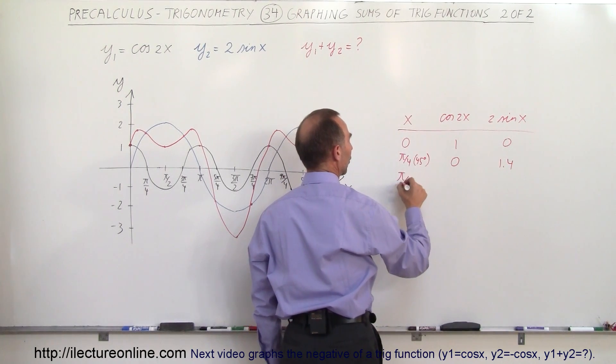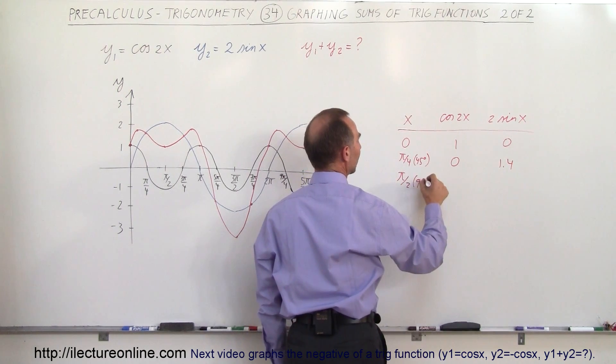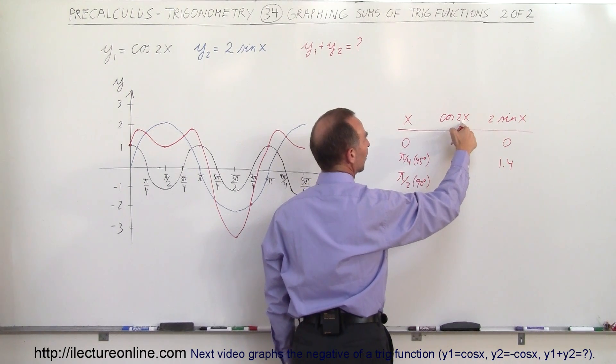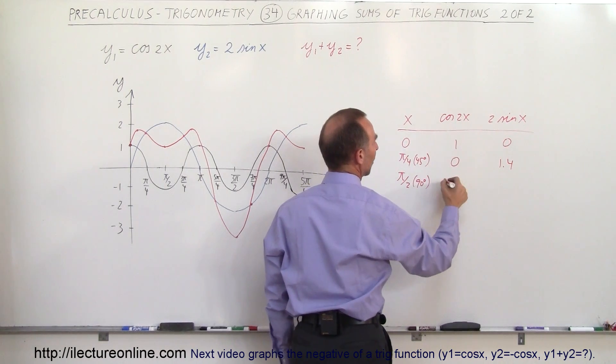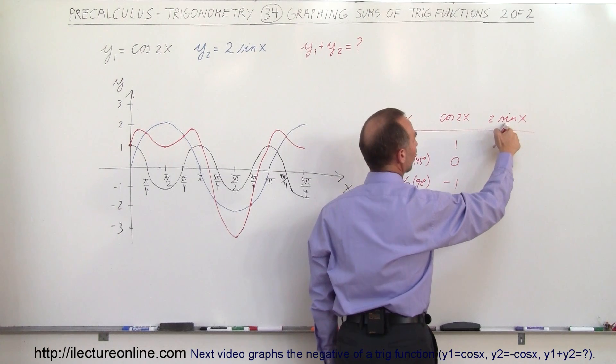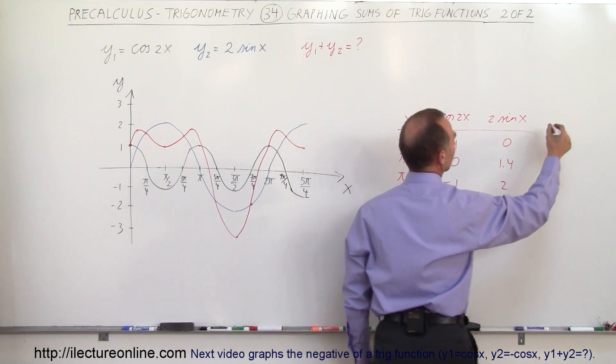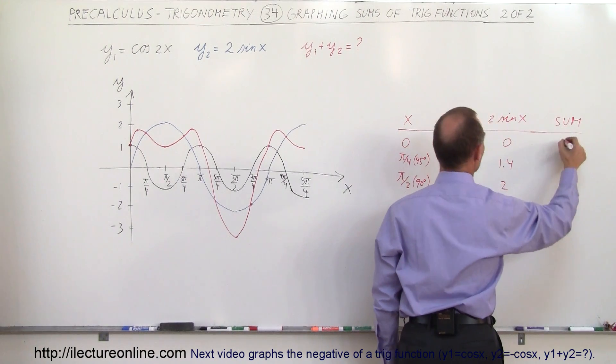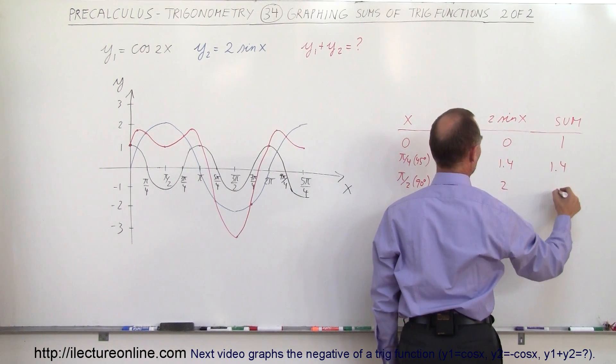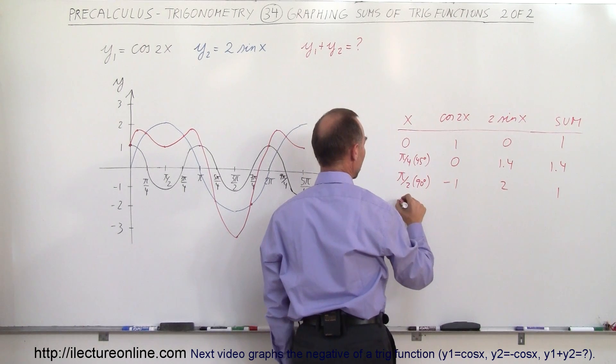Then you go pi over 2, that is at 90 degrees. Cosine of 90 degrees times 2, that's 180 degrees, now we're at minus 1. And sine of 90 degrees is 1, times 2 would be 2, and when you add them together, that would be the sum. When you add them together, you get 1, you get 1.4, you get 1, and you just continue like this.